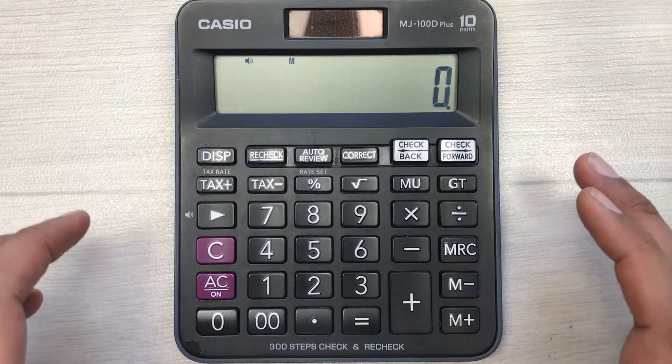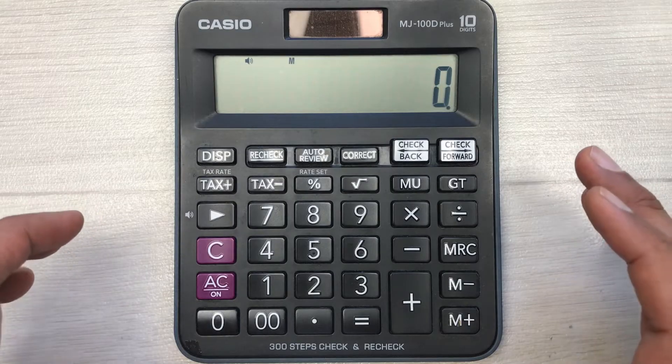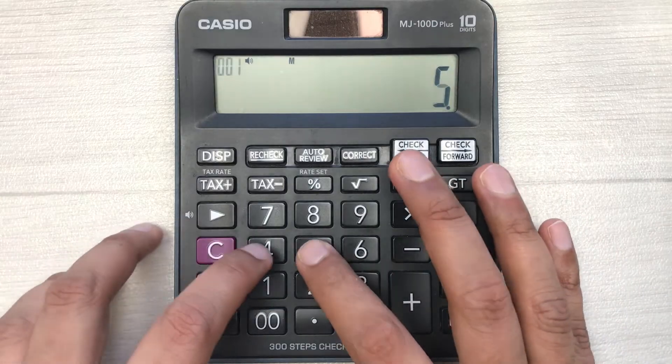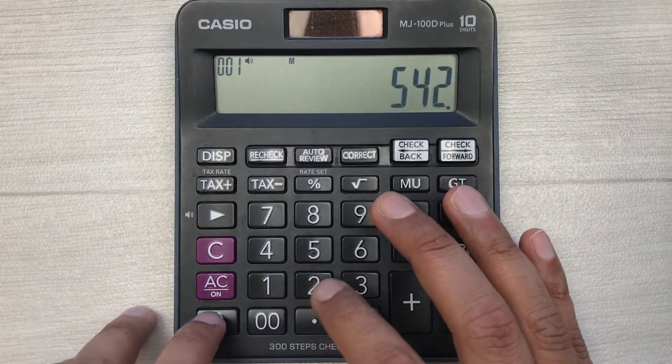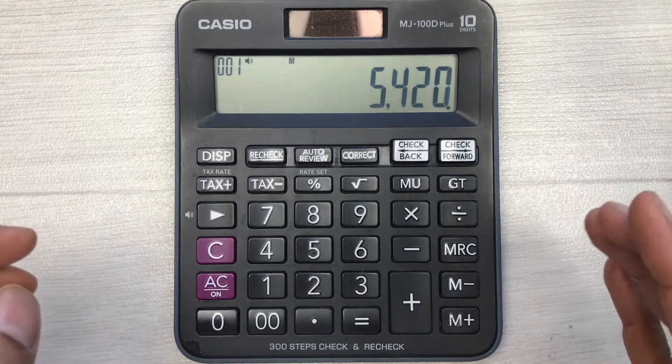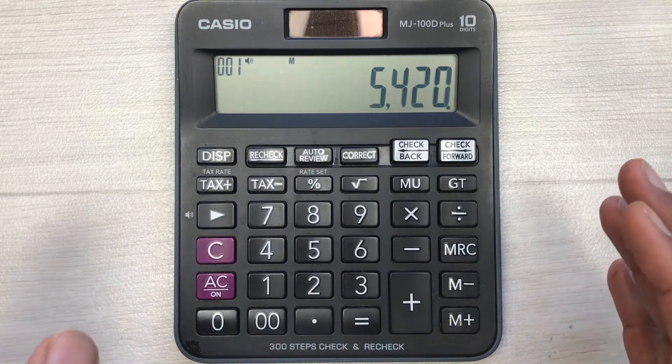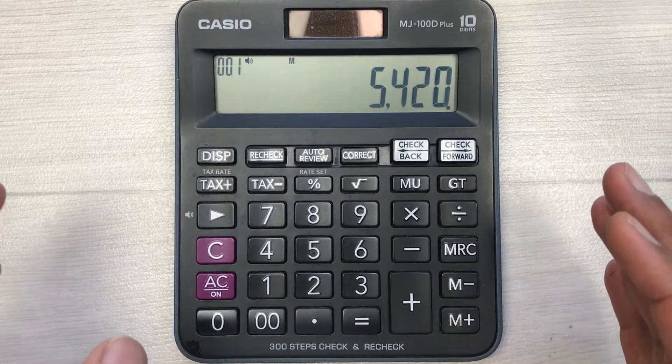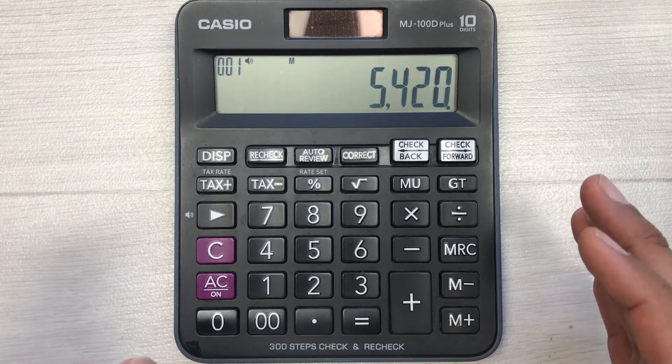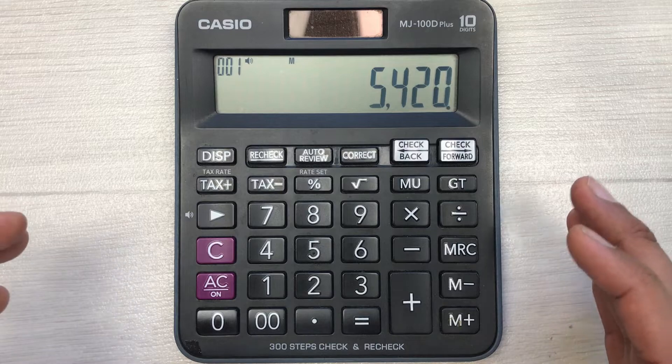For example, you want to buy a t-shirt from a shop and the price of that t-shirt is $5,420. But the shopkeeper said he will give you 30% discount on that t-shirt. So how do you know the final price after 30% discount?